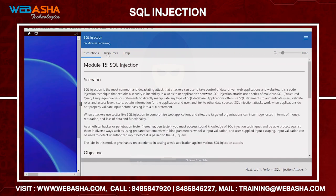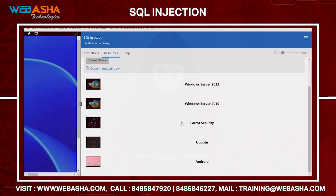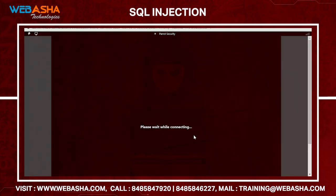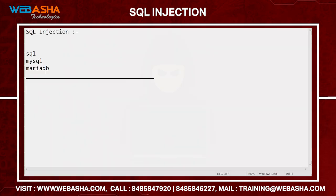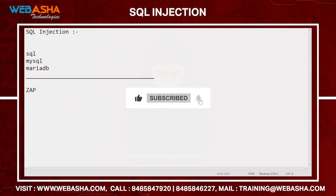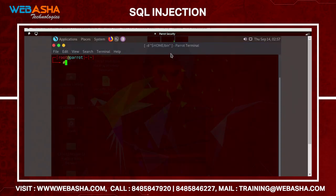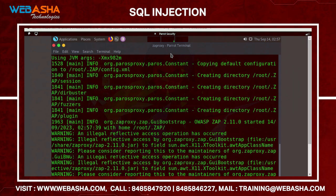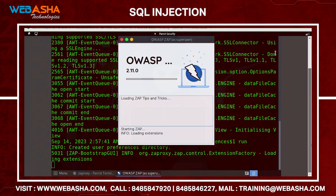First I'm going to launch my attacker machine. On the attacker machine I'm going to use the ZAP tool - the ZAP application - to verify vulnerabilities in my web applications and databases. Simply launch the ZAP proxy; you know how to install it, so just launch it.